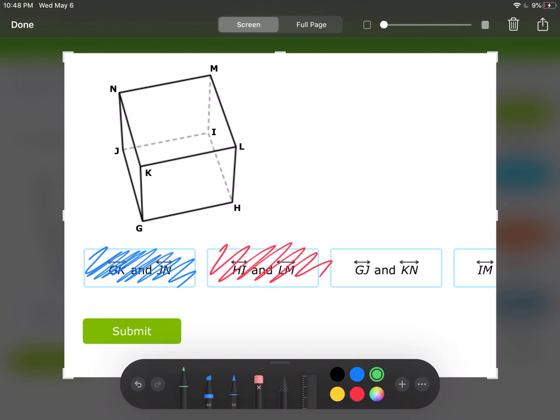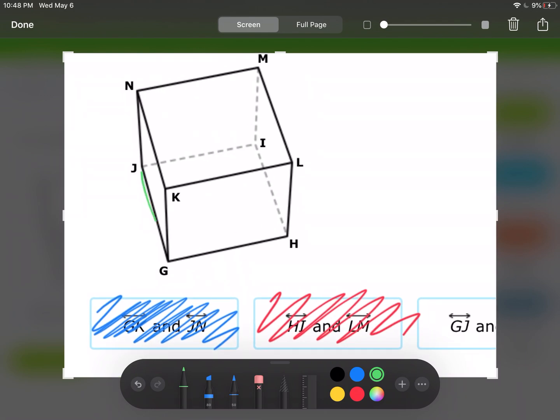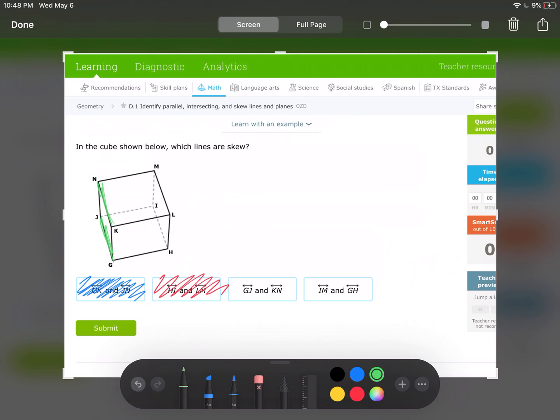GJ and KN. The exact same reasoning. They're on the same face. They're parallel, which means that those can't be skew.